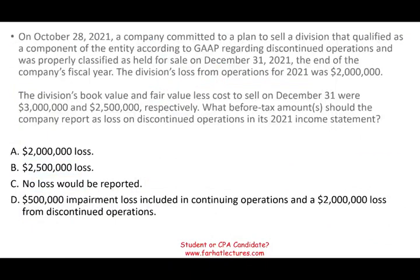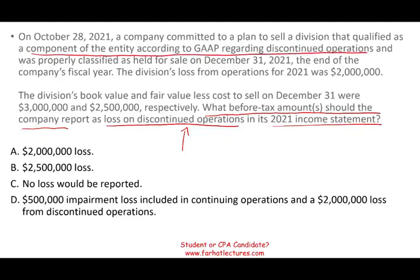Let's take a look at the first question. It's better to read the question first. What before-tax amount should the company report as a loss on discontinued operation in its 2021 income statement? So we are looking for a loss — they're not confusing us between a loss and a gain. Specifically, they are asking about discontinued operation. On October 28th, a company committed to a plan to sell a division that qualifies as a component of an entity according to GAAP regarding discontinued operations, and was properly classified as held for sale as of December 31st, 2021. The division's loss from operation for 2021 was $2 million.